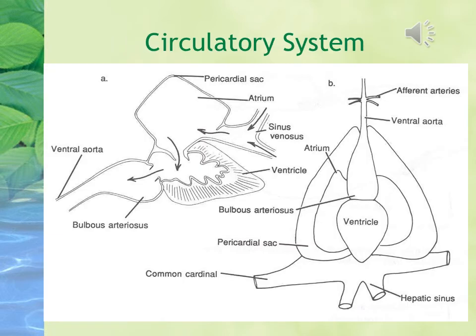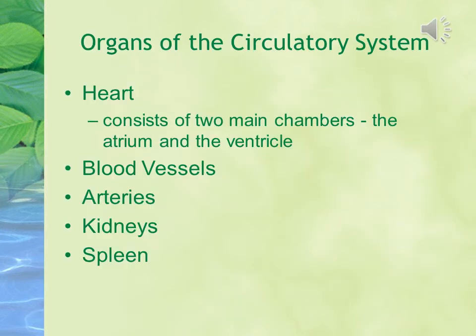The next is the circulatory system. This is a diagram of the heart of the fish, which participates in the function of circulation. The circulatory system distributes blood to all parts of the body. The organs of the circulatory system include the heart, blood vessels, arteries, kidneys, and spleen. The heart consists of two main chambers: the atrium and the ventricle. The function of the spleen is to remove impurities in the blood.